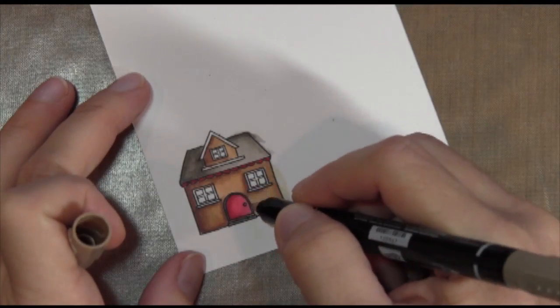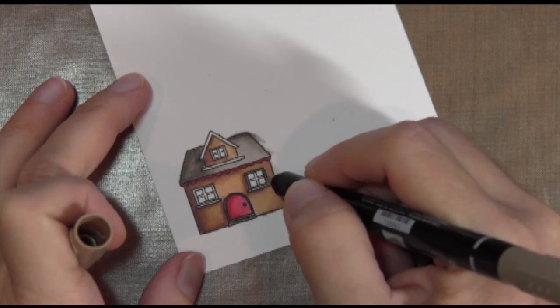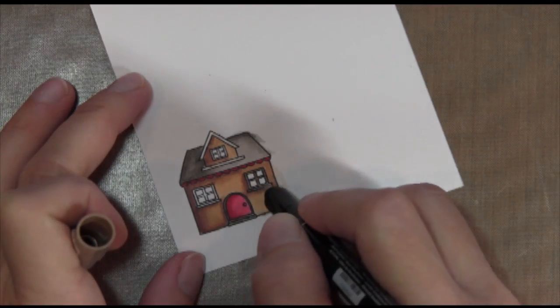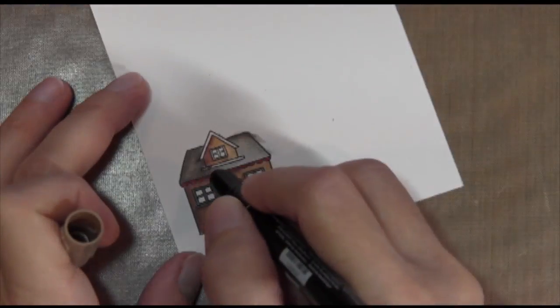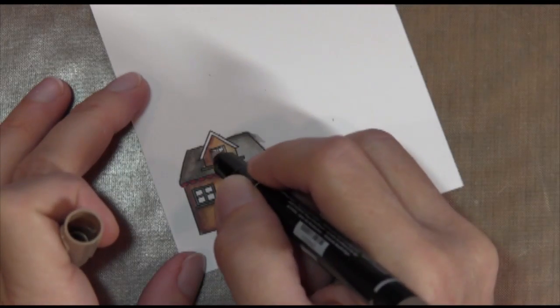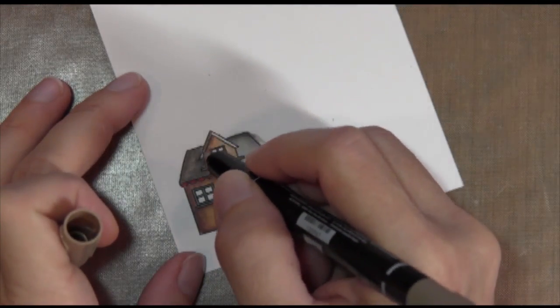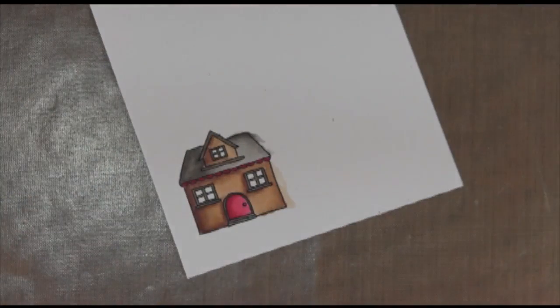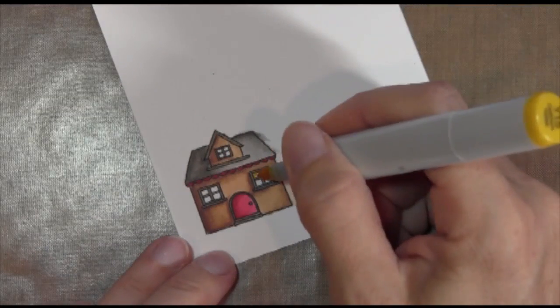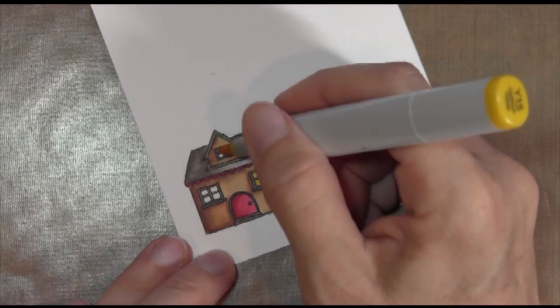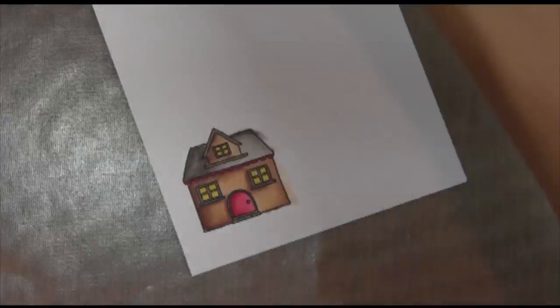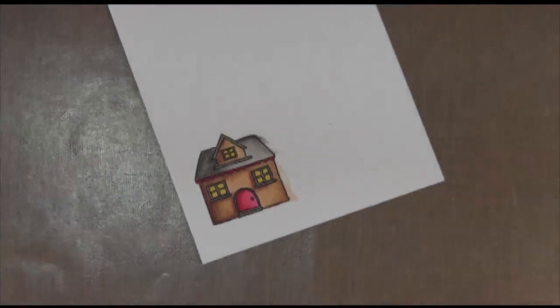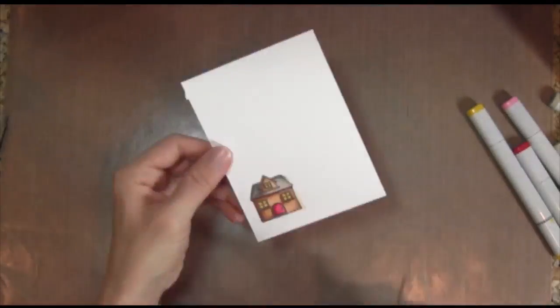These little tiny lines around the doors and the windows are so small, I just took a Stampin' Up crumb cake marker and I just colored them in. And then finally I just took a yellow one and I just colored it in. There's no shading here, it's just too small. So that's my house and I'm going to cut that out.